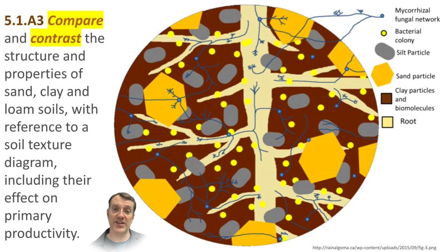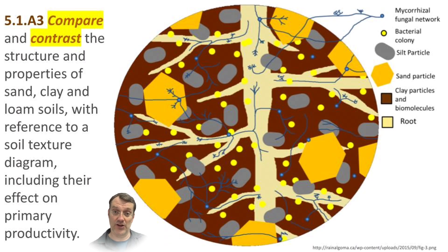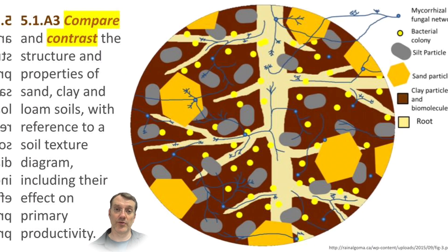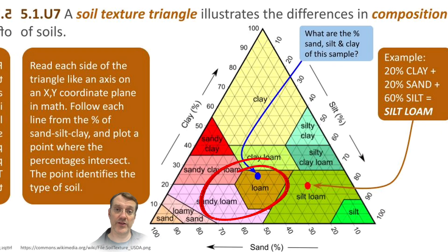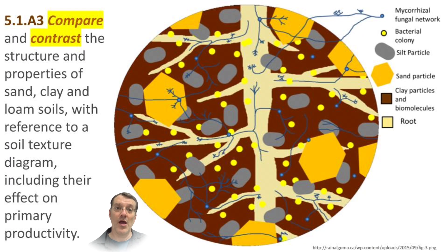Sand, being the largest particles with the largest gaps between them, tends to drain well and aerate quite well. Clay, with particles so small they pack tightly together, inhibits drainage and holds water, so soils with too much clay tend to get waterlogged — that's why clay is used to make ceramics and pots; it becomes impervious. Silt is a nice blend: big enough to allow air and water space between particles, but not so large that it drains too quickly for plants. Ideally, you want a blend of all three: sand to promote drainage and facilitate root growth, silt to retain water and nutrients long enough for plants, and a little clay to slow vertical drainage and prevent excessive leaching of nutrients.